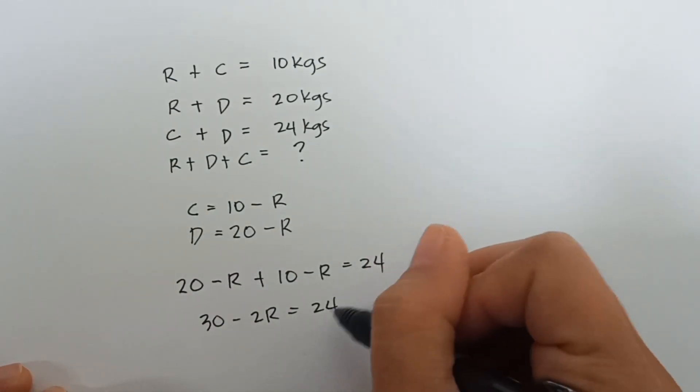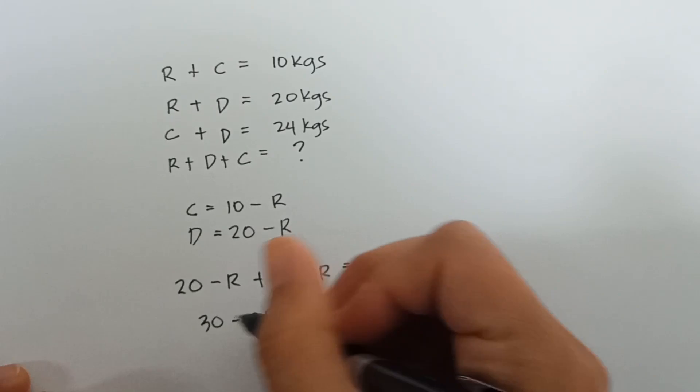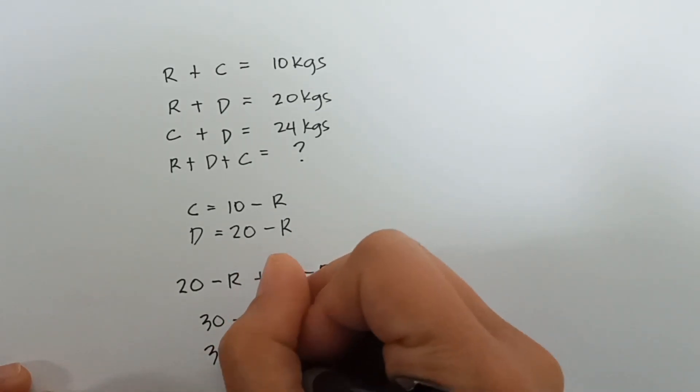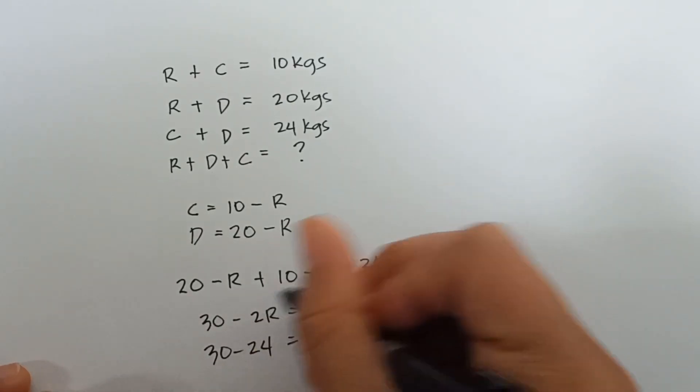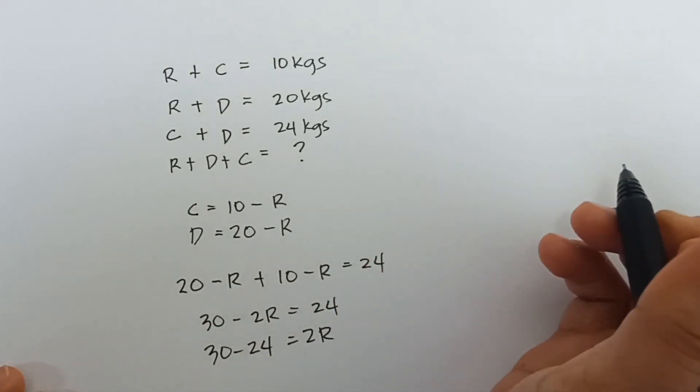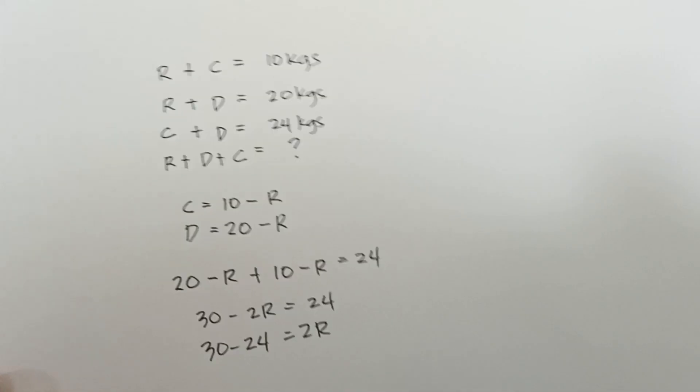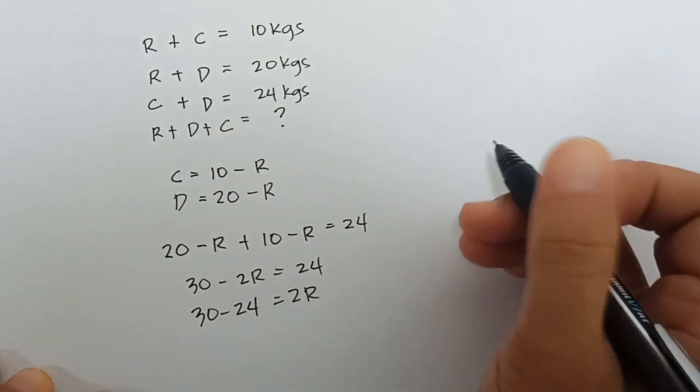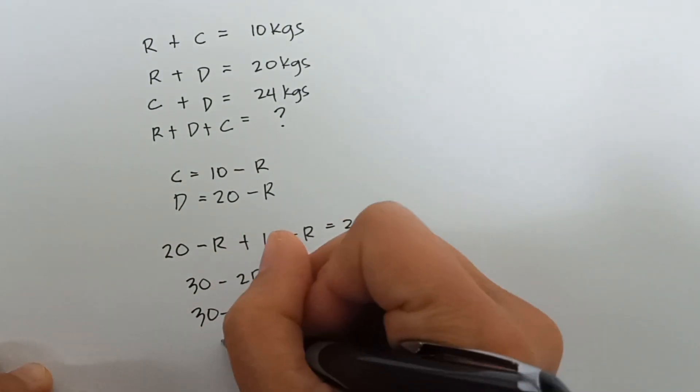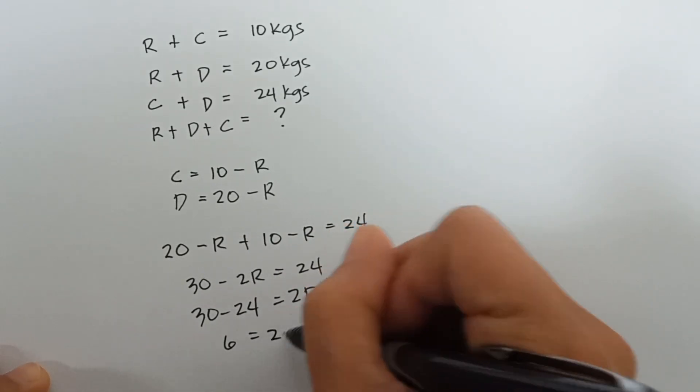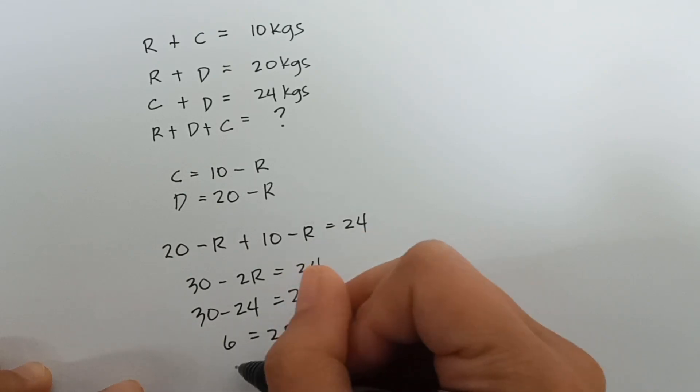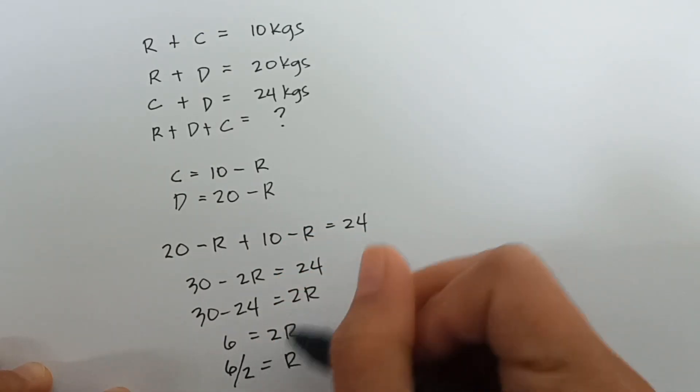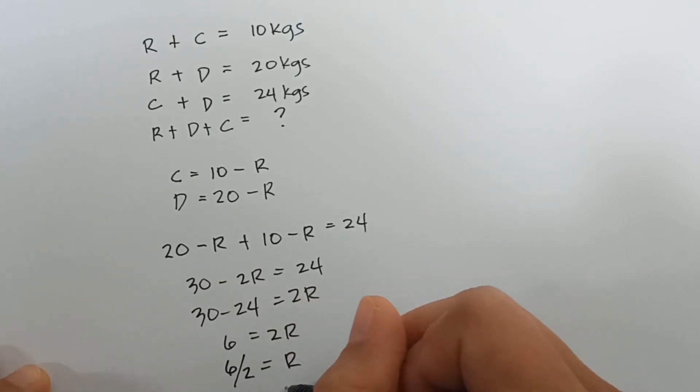So, 30, let's transfer that 24 here. 30 minus 24 equals 2R. So, 6 equals 2R. We need to transfer the 2 here. So, divide 6 by 2 equals R. So, R equals 3.